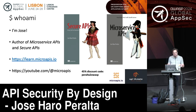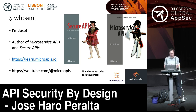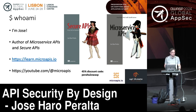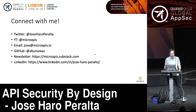Before we jump into the details, let me introduce myself. My name is Jose. I'm the author of two books. The first is Microservice APIs, published in December 2022. The second, Secure APIs, is coming — I'm writing chapter five right now, which is all about security by design APIs. I have a website, learn.micropis.io, where I'm planning to upload courses, and a YouTube channel with tutorials about APIs and security.